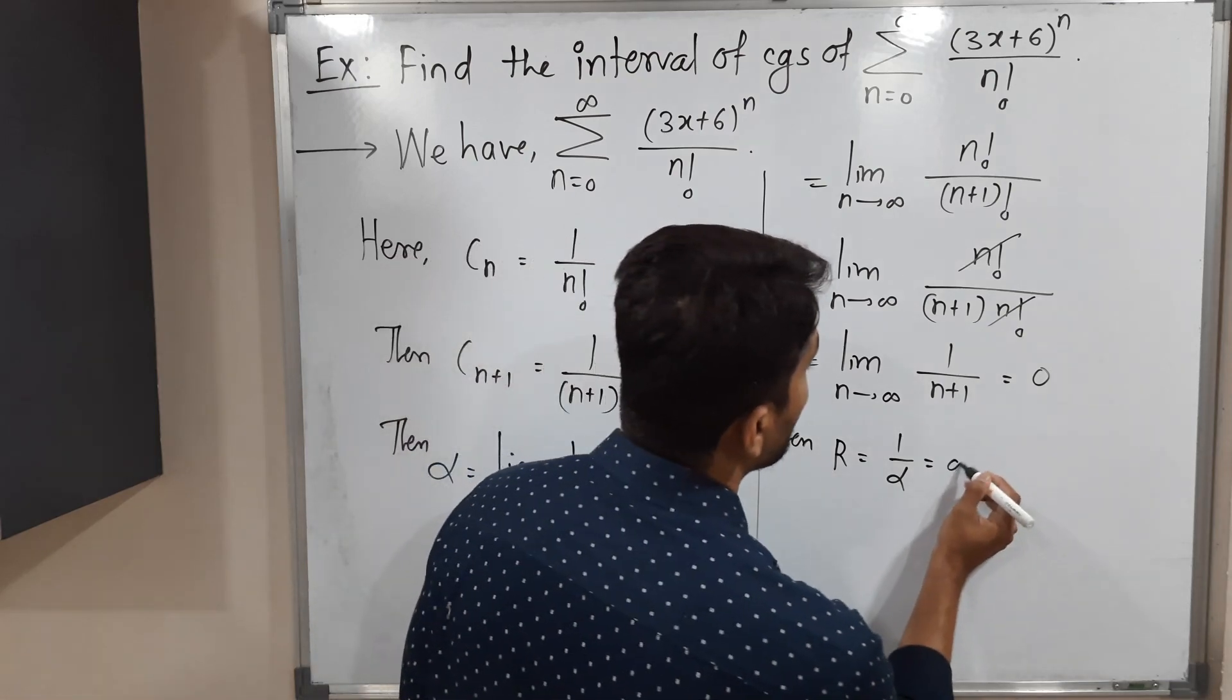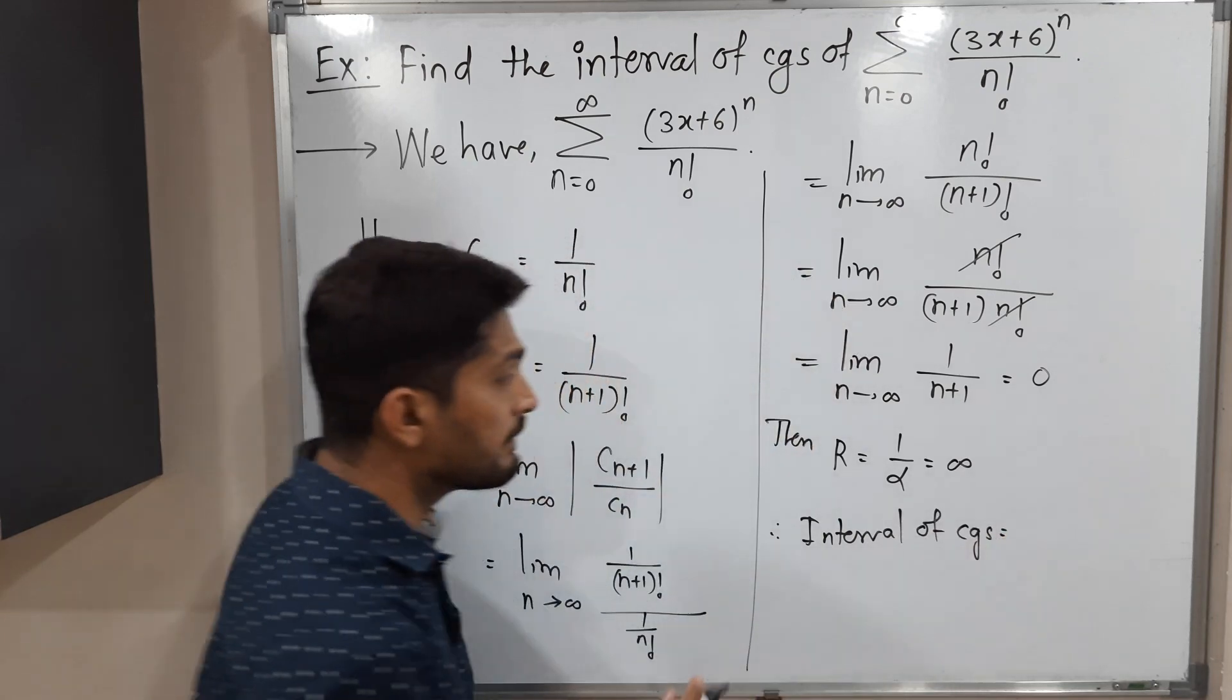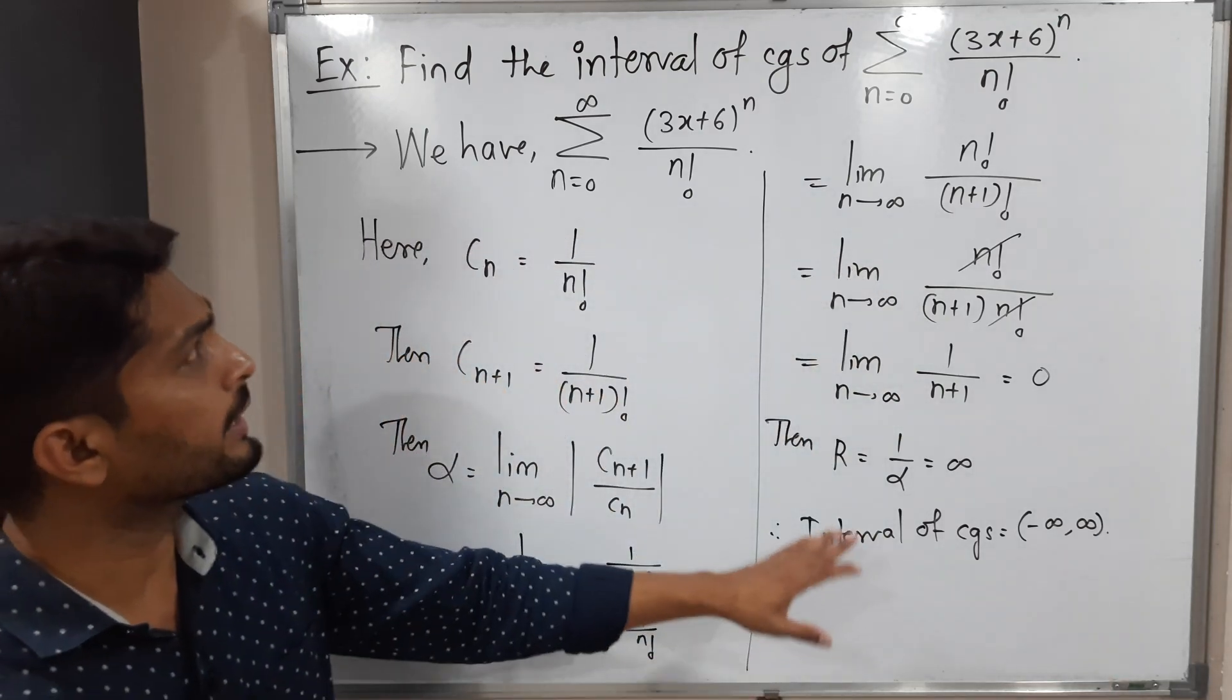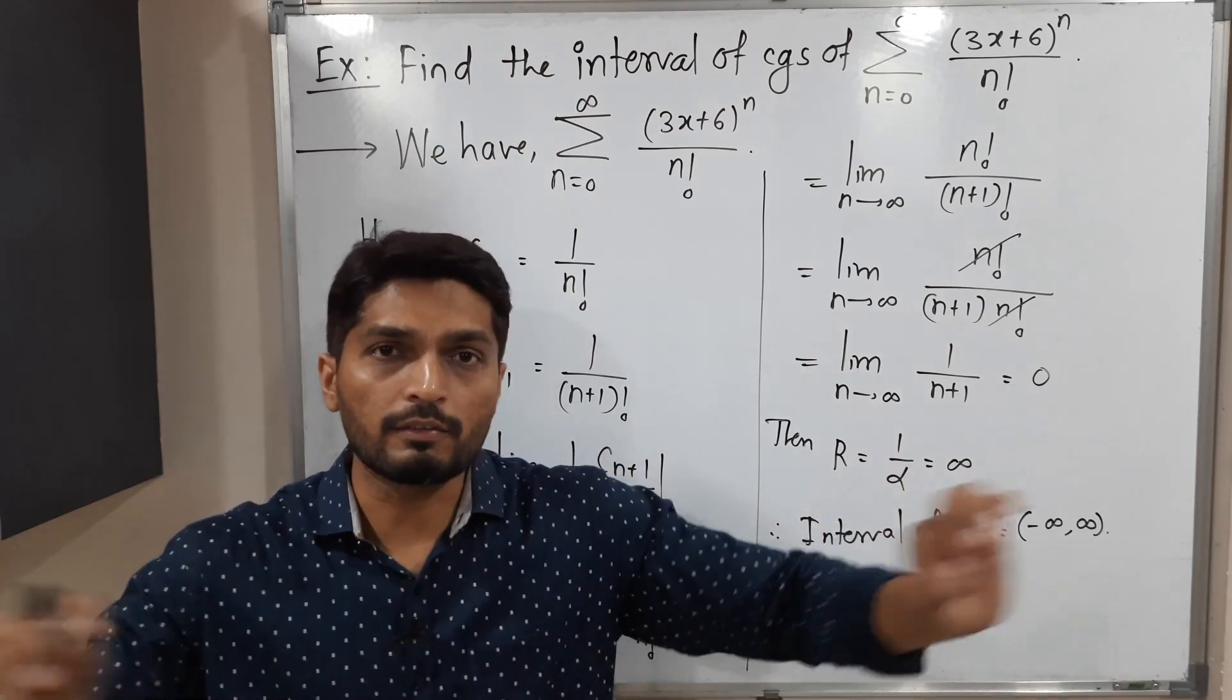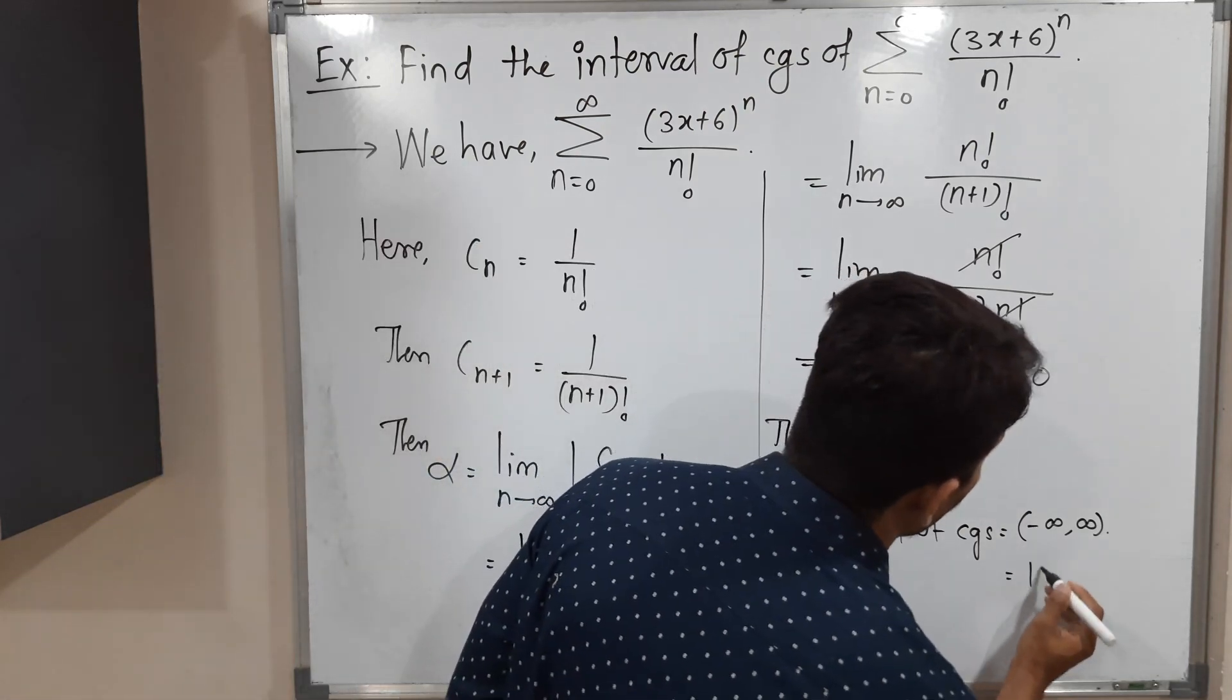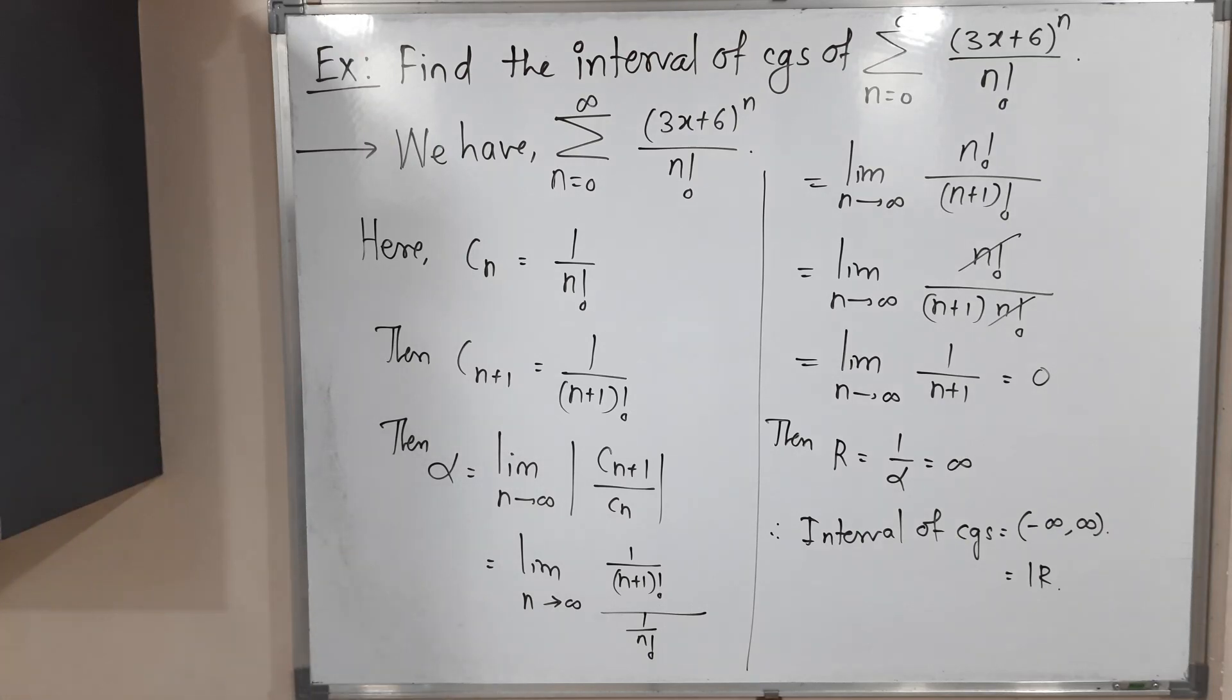So let us find the interval of convergence. See, if the radius of convergence is infinity, the interval of convergence is obviously minus infinity comma infinity. It does not depend on any x or 3x plus 6. If the radius of convergence is infinity, the interval of convergence is obviously minus infinity comma infinity, or you can also call it as the set of real numbers. That means for each and every real number, the given power series is convergent. So make a screenshot of it. Then we will stop. Thank you, see you.